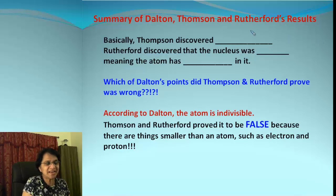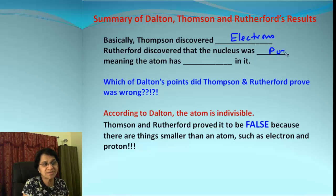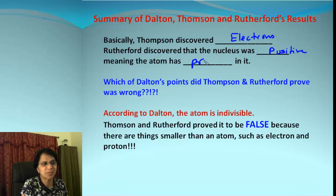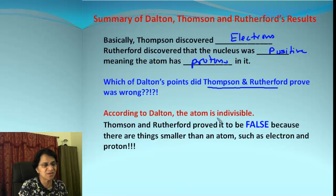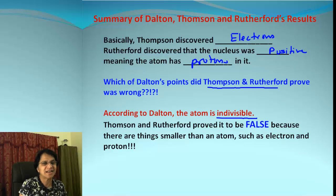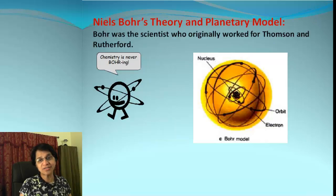To summarize: Thomson discovered electrons, and Rutherford discovered that the nucleus is positive — meaning the atom contains protons with positive charge. Both Thomson and Rutherford proved that Dalton was wrong about atoms being indivisible, because they identified particles smaller than an atom — namely electrons and protons. And so the atomic model did not stop there.